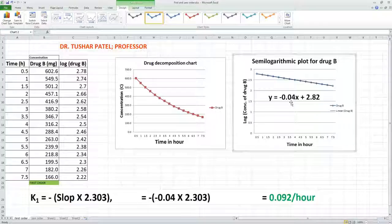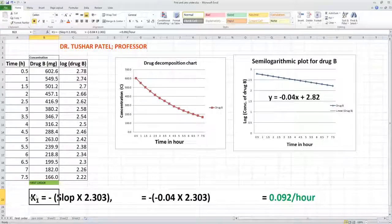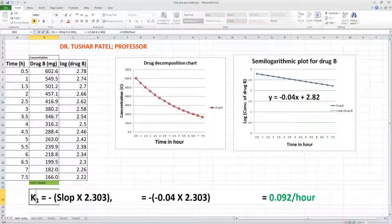This equation is in the form of y equals mx plus c, so m here is -0.04. The slope is -0.04. Now use the formula: first-order reaction rate equals minus slope times 2.303.